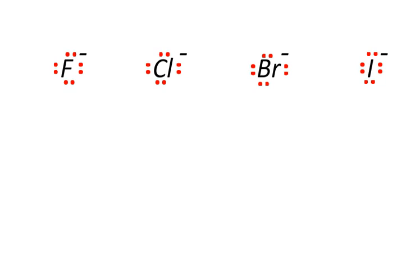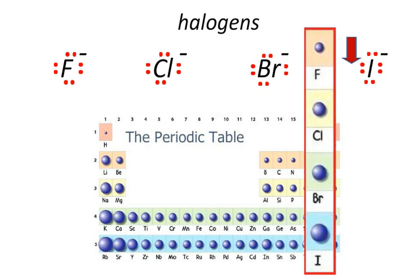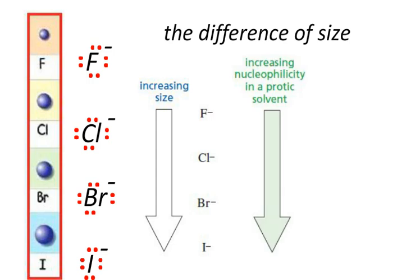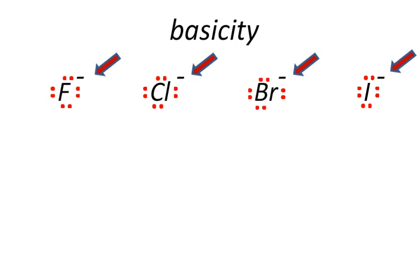But what if we want to compare between molecules with different sizes, like halogens? Let's remember that halogens belong to the same column in the periodic table and their size increases moving up to down. In this case, the difference of size will change the order of reactivity of nucleophilicity and basicity, and they will no longer be aligned.